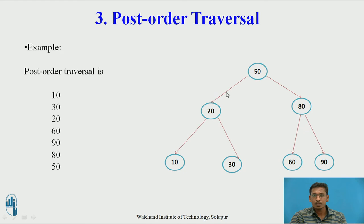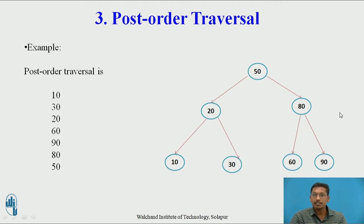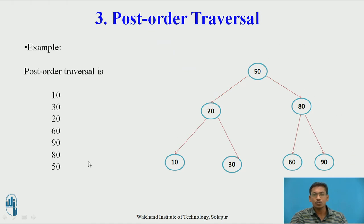First we find the post-order traversal of the left subtree: 10 appears as output (left subtree), then 30 (right subtree), then 20 (root). This completes the post-order of the left subtree. Then for the right subtree: 60 appears first, then 90 (right subtree), then 80 (root). Finally, the main root 50 appears last. Remember that in post-order traversal, the root appears as the last element.